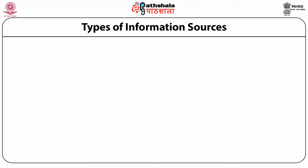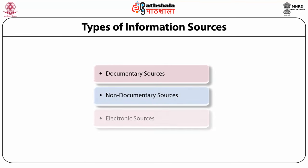Information sources can be categorized as documentary sources, non-documentary sources, and electronic sources. All recorded sources of information, irrespective of their content and form, come under documentary sources — these could be published or unpublished, in print or electronic form. Non-documentary sources are defined as those sources and resources of information not contained in any document, comprising formal and informal sources. We will study documentary sources in another module.